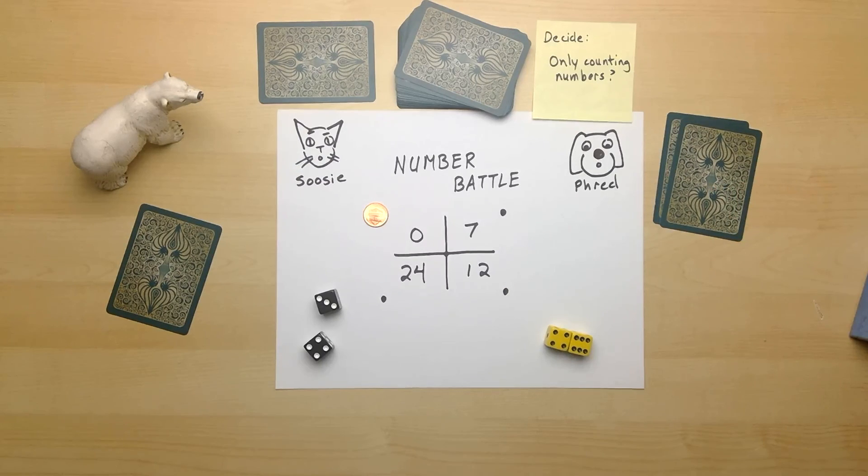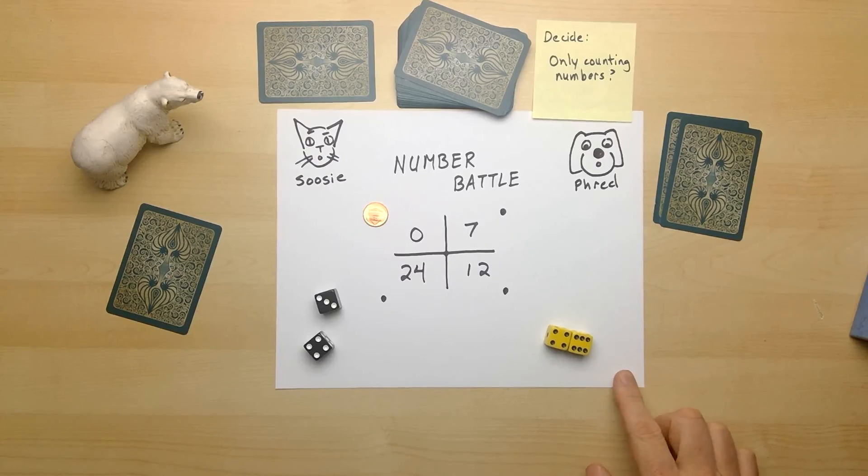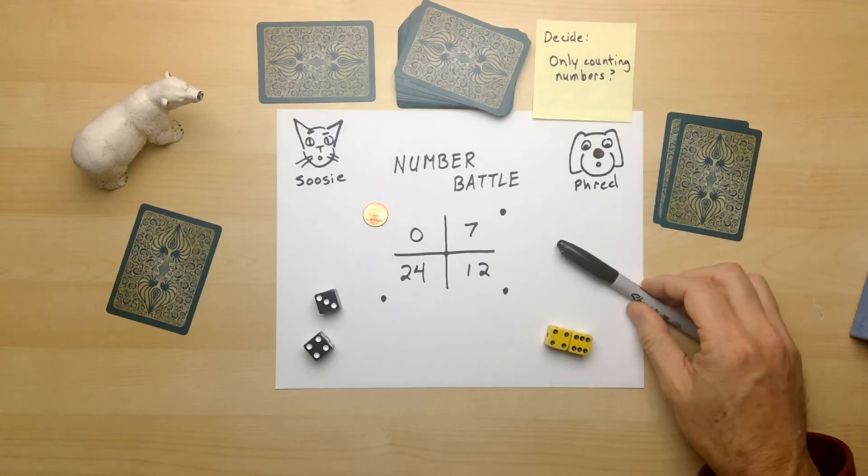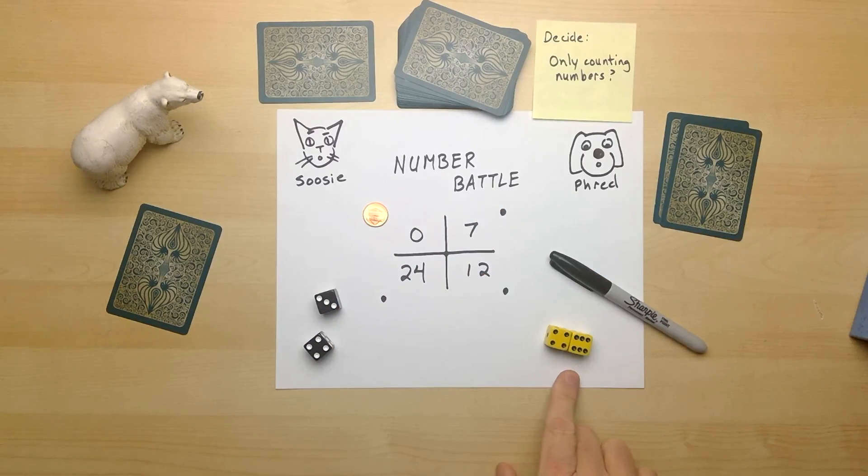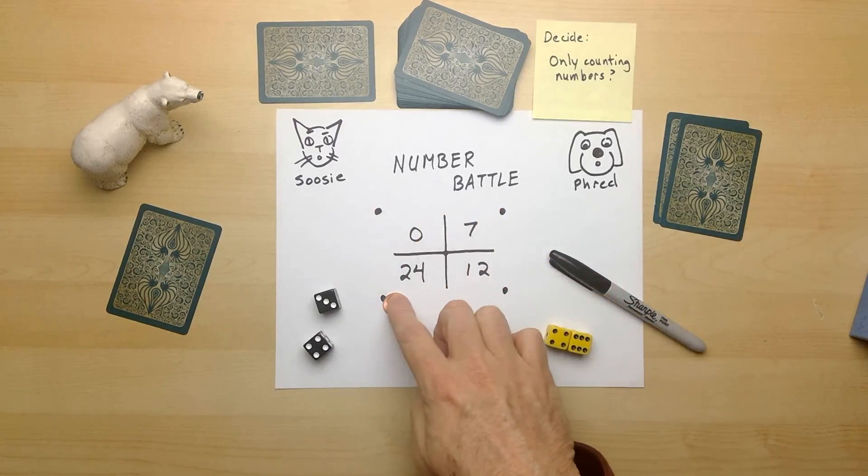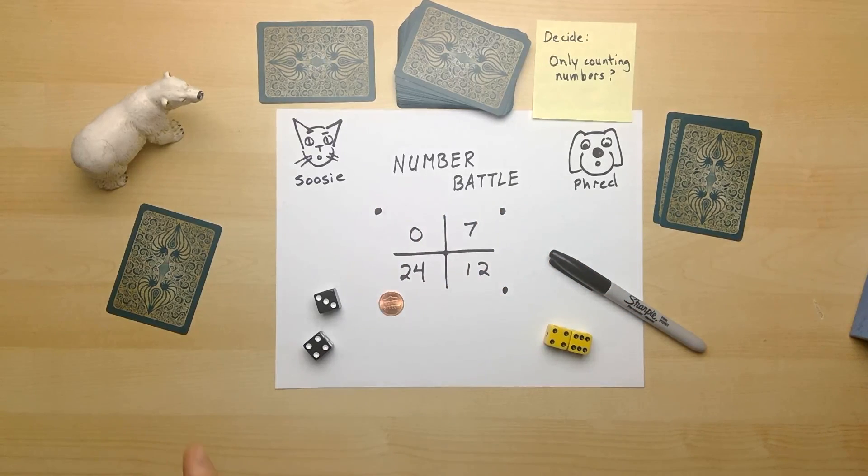So this is the game number battle. Remember, you need to have some paper, something to write with, maybe a friend or two, some dice, maybe a penny to move things around, and maybe a bear.